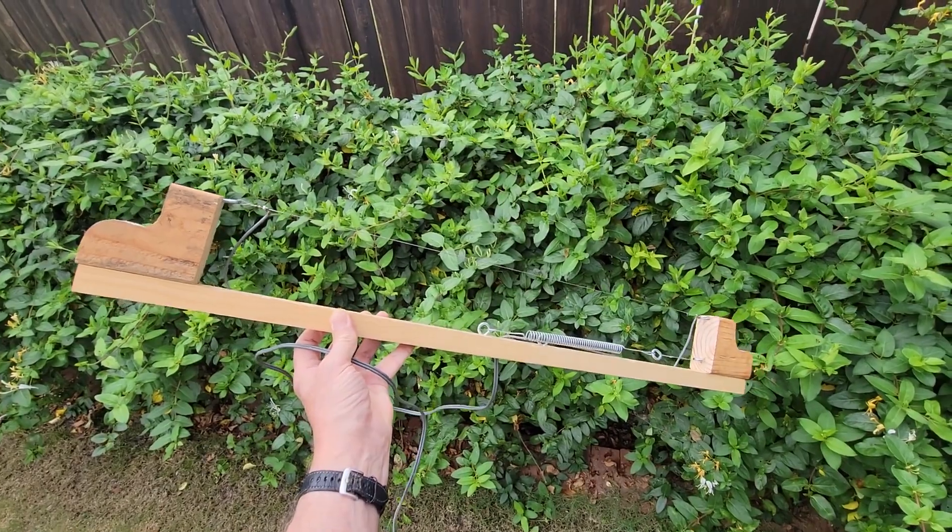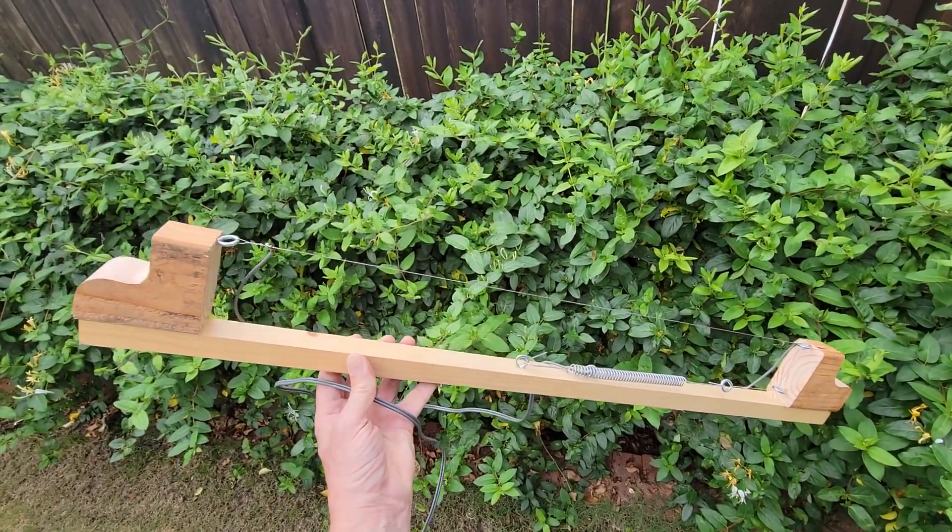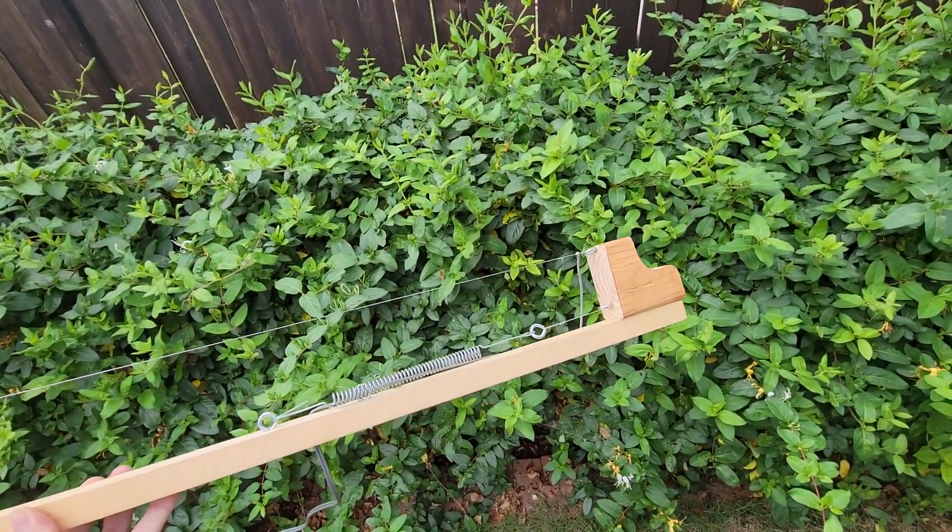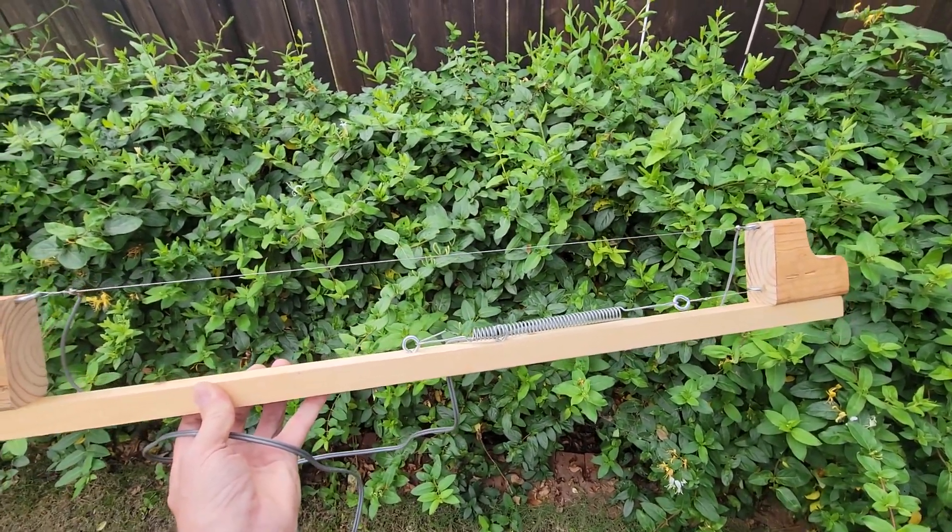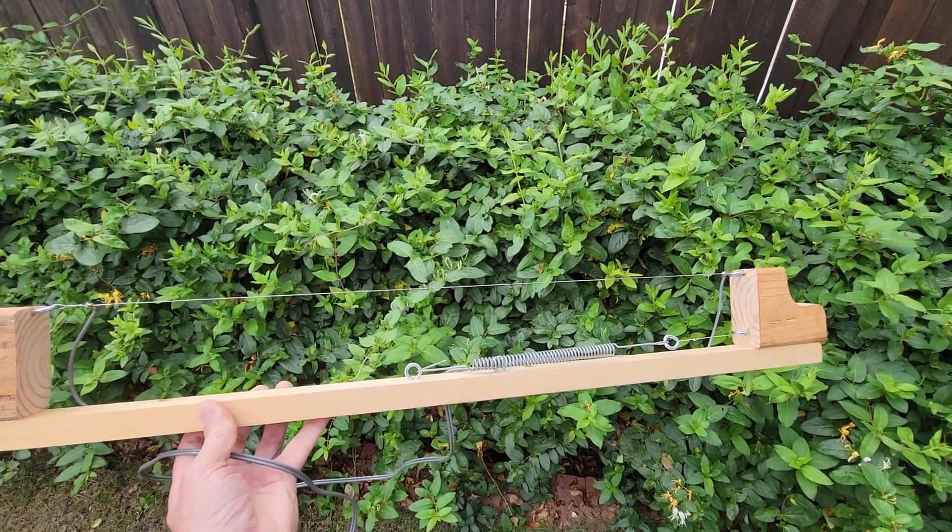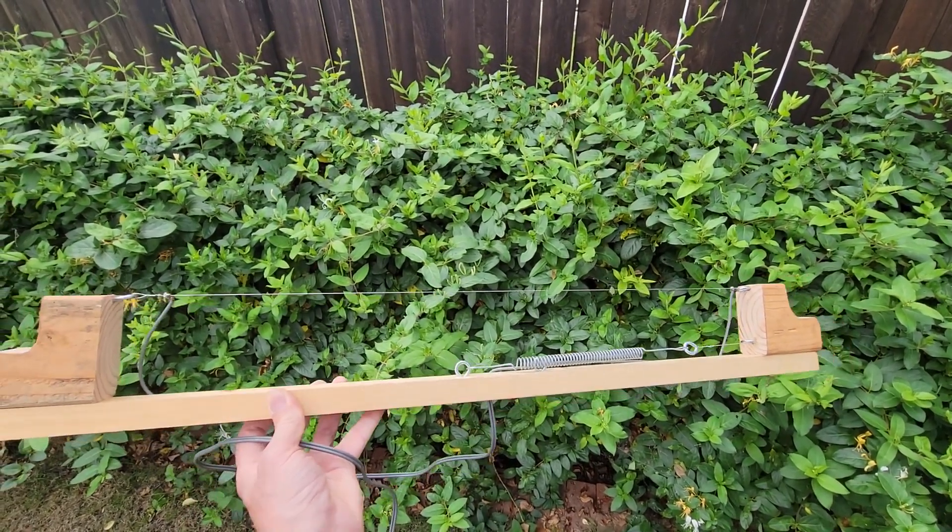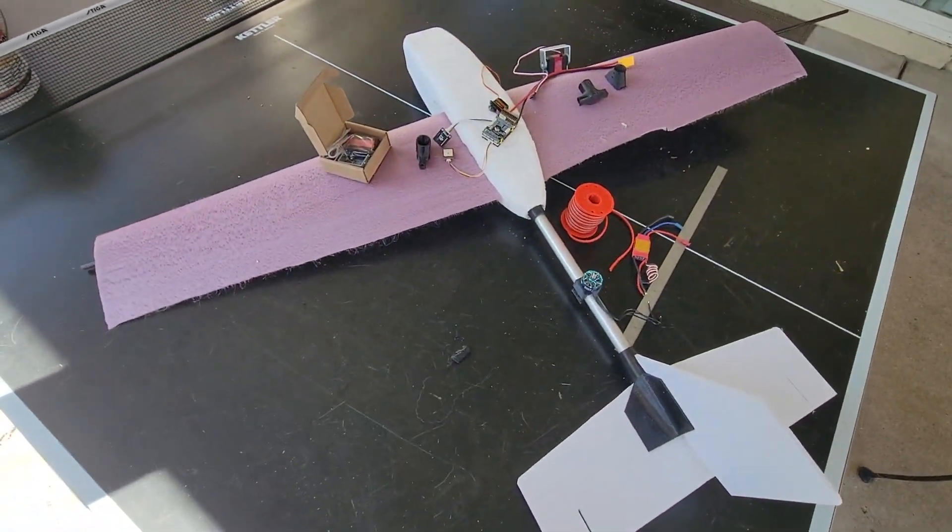And this is the bow foam cutter again. We've got our nichrome wire there, run through a couple of pivot points and a spring to keep it tight as it will stretch as it heats up.